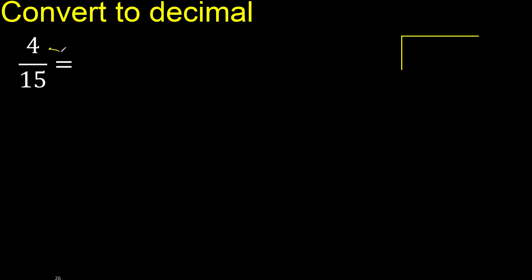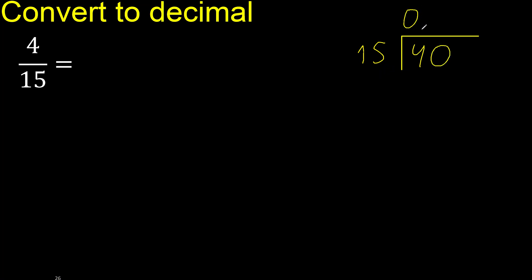4 divided by 15. 4 is less, therefore complete — always complete with 0. Here: 0 point.